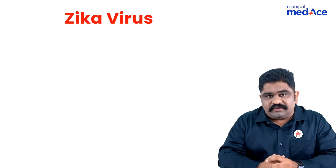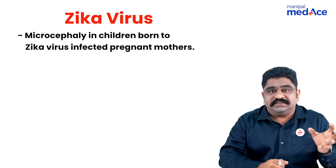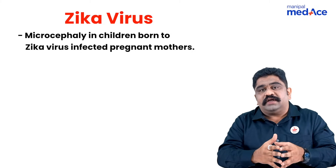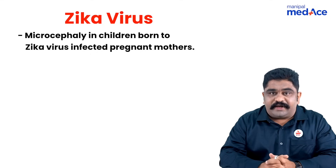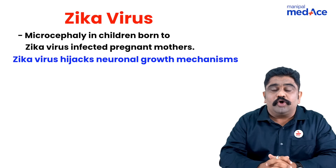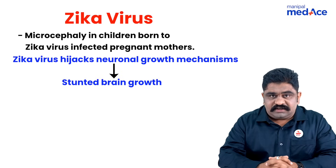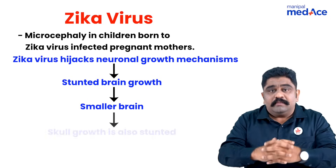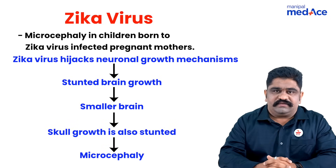Zika virus is capable of causing microcephaly, and if the mother is infected while she is pregnant, it is capable of intrauterine transmission to the child. The child may have microcephaly because the Zika virus hijacks the neuronal growth mechanism of the child, and brain development is stunted, causing the brain's growth to shrink and the skull to subsequently shrink. This is how microcephaly happens.